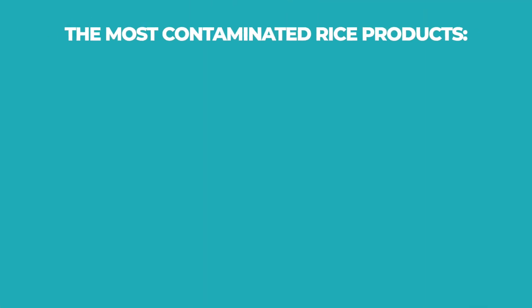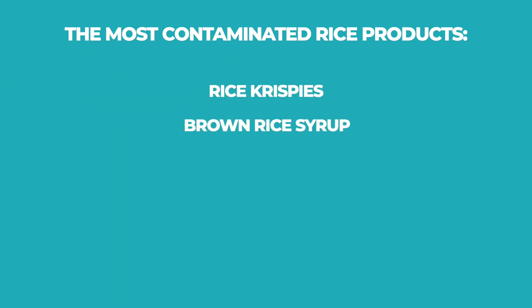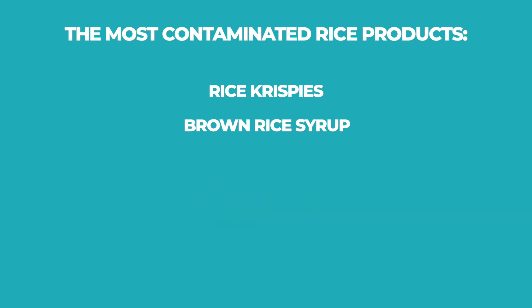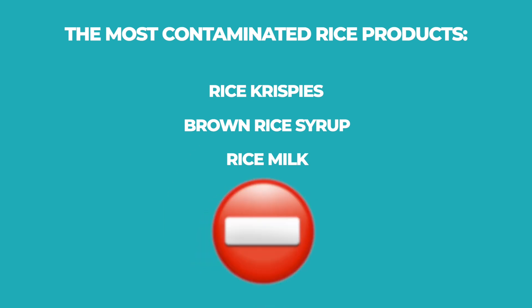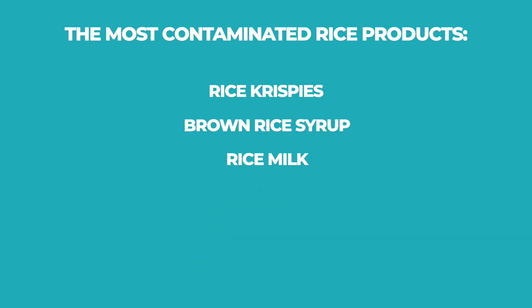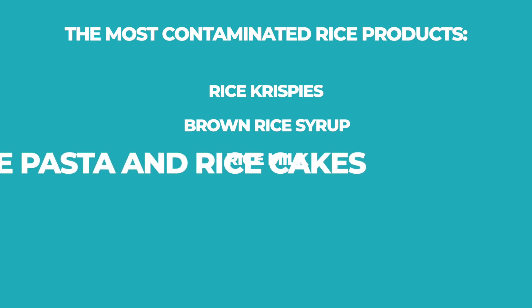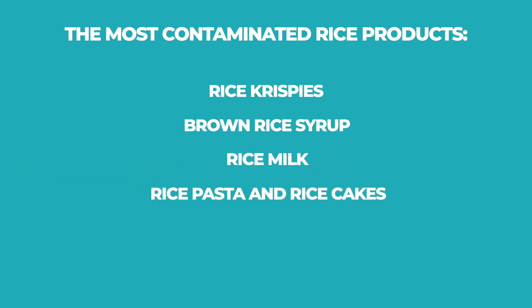The most contaminated rice products are rice krispies and brown rice syrup. Toddler formulas with added organic brown rice syrup have 20 times higher levels of toxic arsenic. Rice milk — the UK has banned its consumption for young children and recommends no more than half a cup a day for adults. Rice pasta and rice cakes end up similar to pure rice; however, when pasta is cooked, we'd expect the levels to be cut by 40 to 60 percent. Rice vinegar, though, doesn't seem to be anything to worry about.